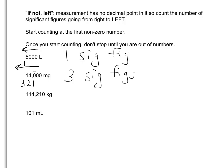Now don't get carried away with that bar over the zero — we never use that in decimal place values. In 114,210 kilograms, no decimal point, count to the left. The first number is a zero, so we're going to skip it. We've got five significant figures.